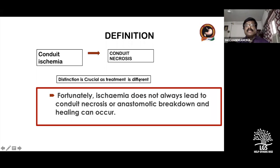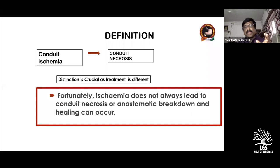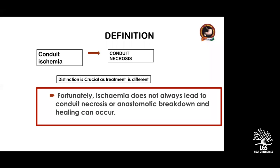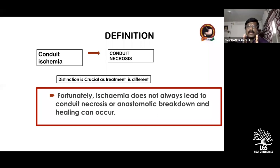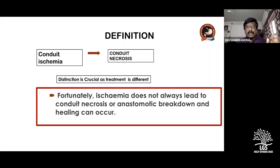This distinction is crucial as the treatment is different. If there is only ischemia evident endoscopically with no leak, or a trivial leak in the neck, you need not worry much. However, if the ischemia or necrosis extends into the chest below the level of the suprasternal notch, you must be really concerned. The major decision will be whether to leave the conduit, remove it, or remove part of it.